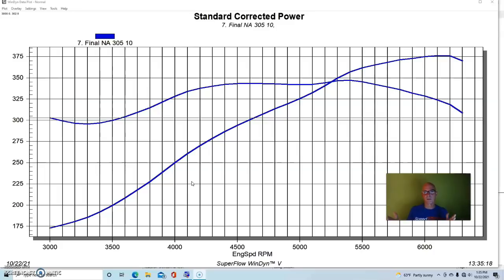The reason for that is not so much the displacement of the 305 or really even the bore size, other than the bore size limiting the number of cylinder heads that are available for this combination. But we were able to cure that with a Trick Flow head.